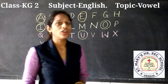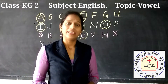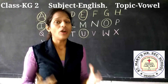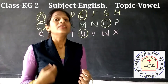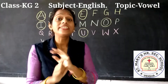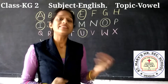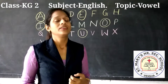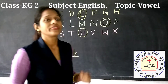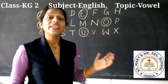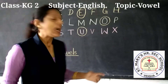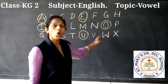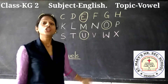The special characteristic of vowels is that when we pronounce a vowel, our lips will not touch each other. Let's pronounce them and learn: A, E, I, O, and U.